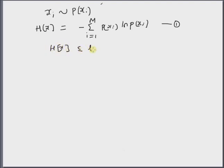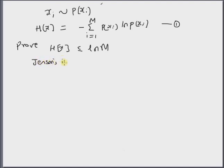Our goal is to prove that the discrete entropy is upper bounded by the logarithm of the number of samples, that is log of m. In order to prove this theorem, we will make use of Jensen's inequality.